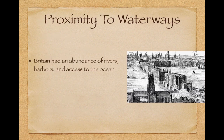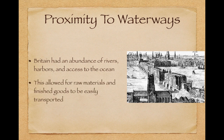Proximity to waterways: Britain had an abundance of rivers, harbors, and access to the ocean. Britain is an island with lots of water surrounding it. This allowed for raw materials and finished goods to be easily transported. The water was also used in factories too.